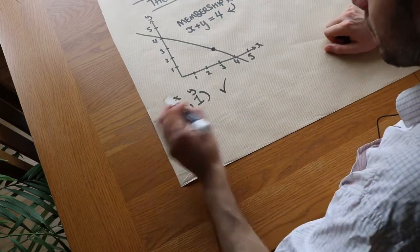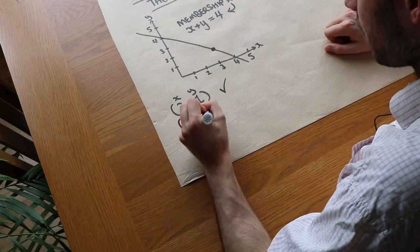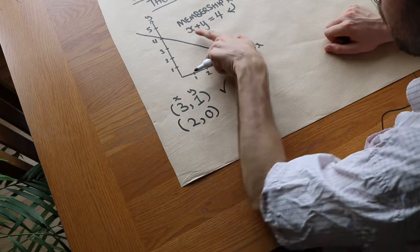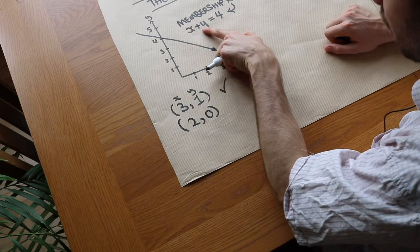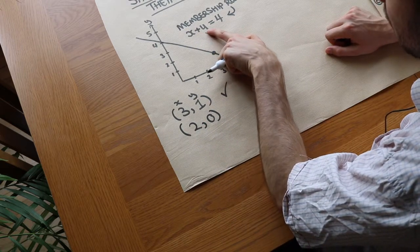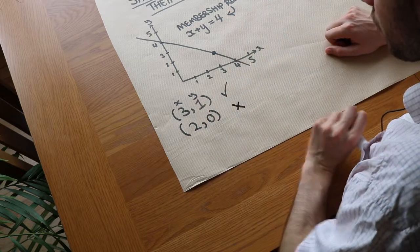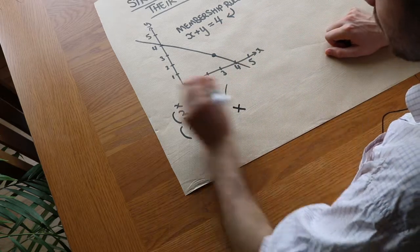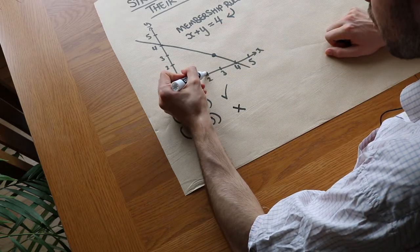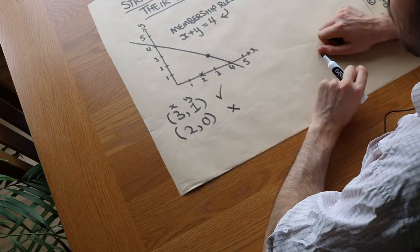Let's take another point: 2, 0. The x value is 2 plus the y value 0. 2 plus 0 is 2. Is 2 equal to 4? No, it's not. So it's not on the line, and as you can see the point 2, 0 is here and indeed that's not on the line.